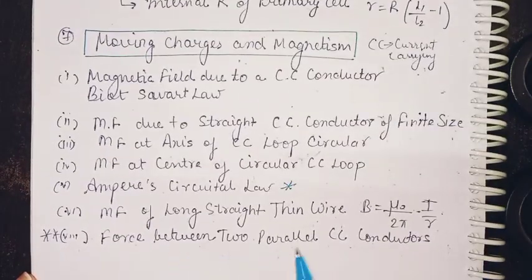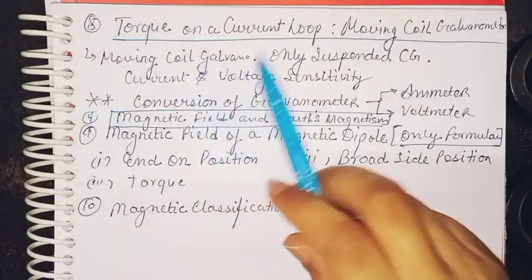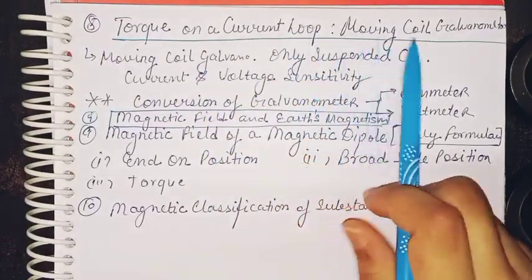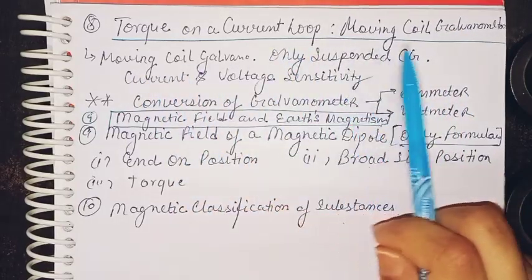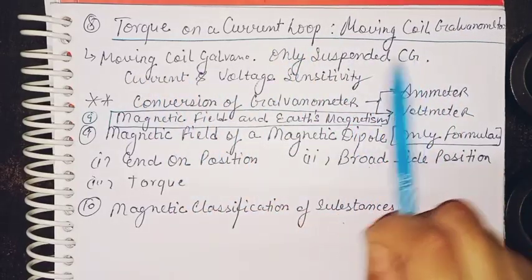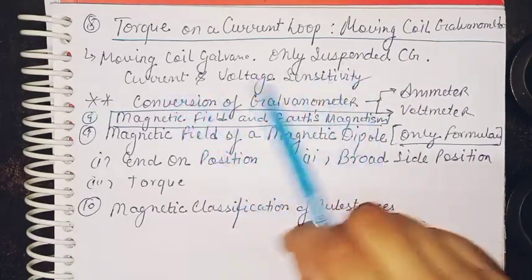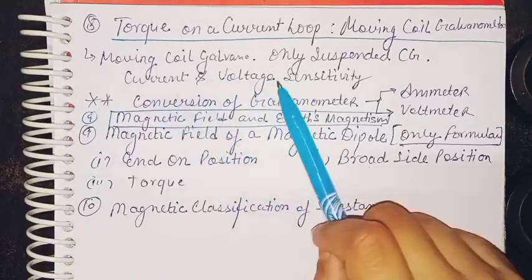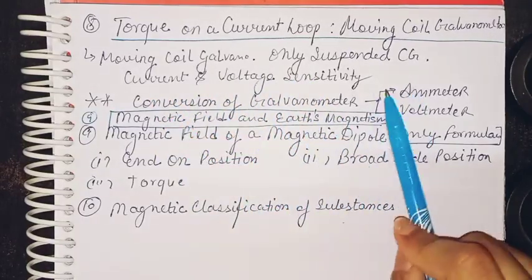Force between two parallel current carrying conductors. Then torque on a current loop. Moving coil galvanometer - you have to do only the suspended coil galvanometer. Current and voltage sensitivity - you have to learn both of these formulas. Conversion of galvanometer into ammeter and voltmeter.